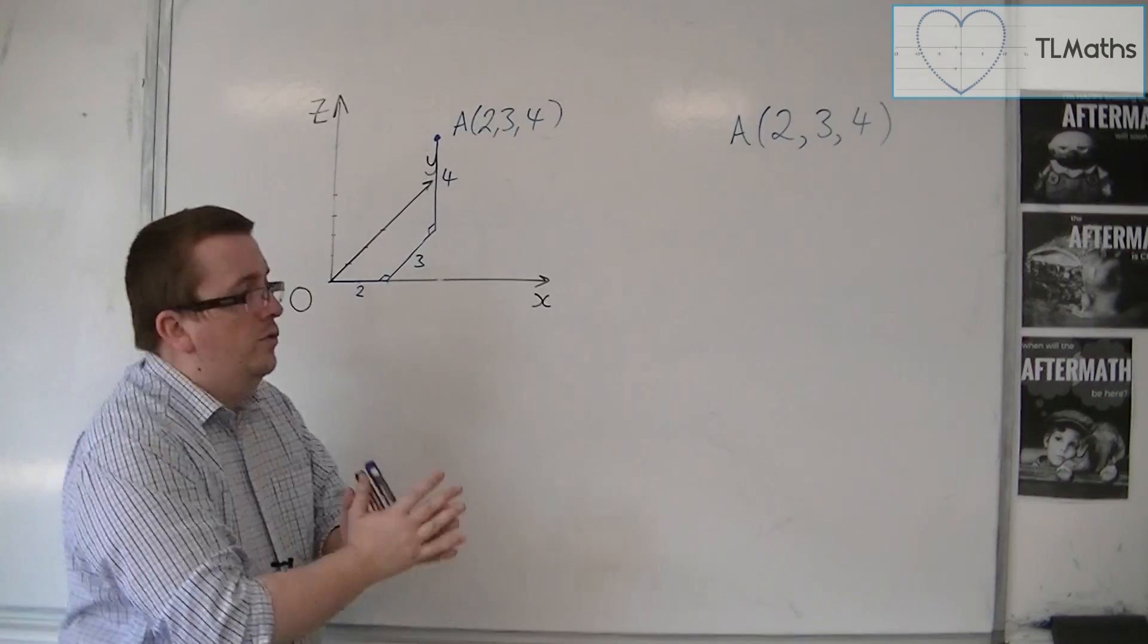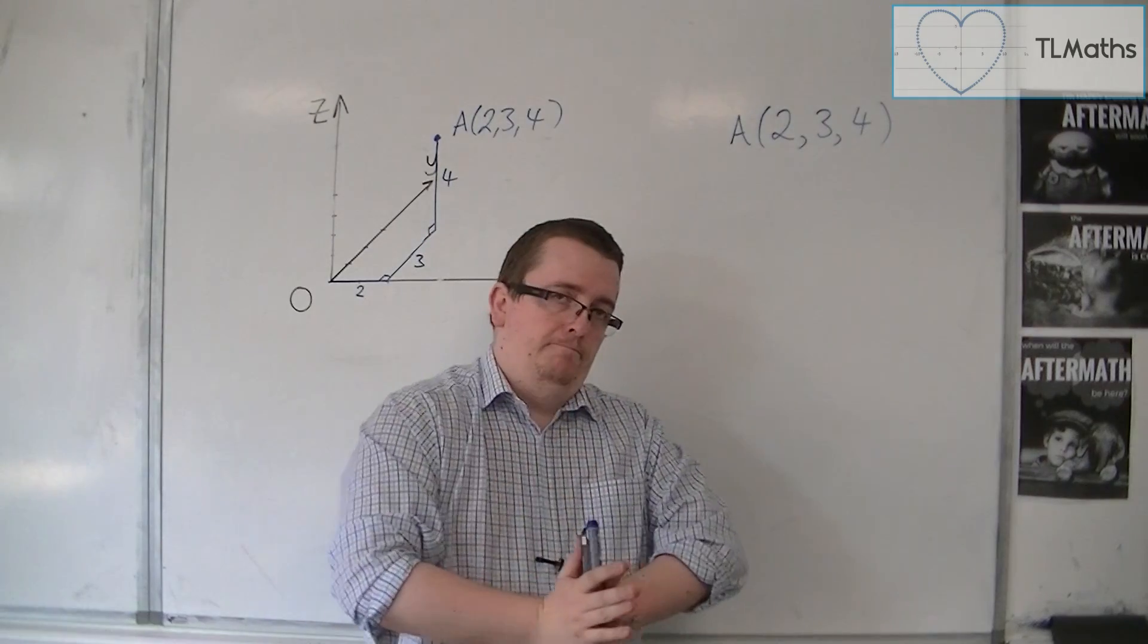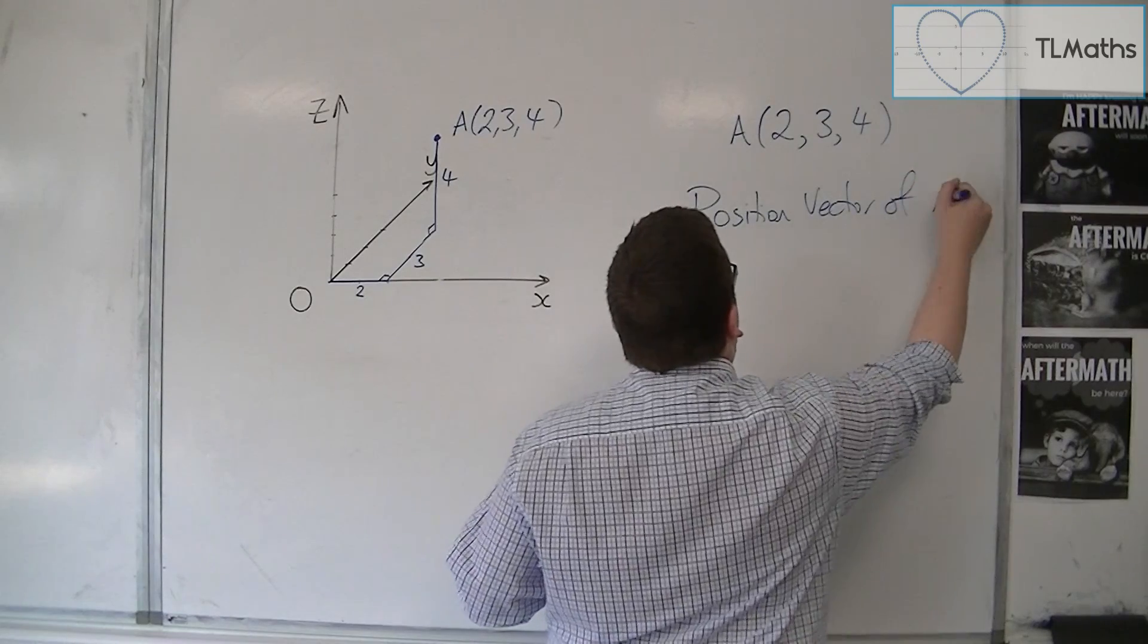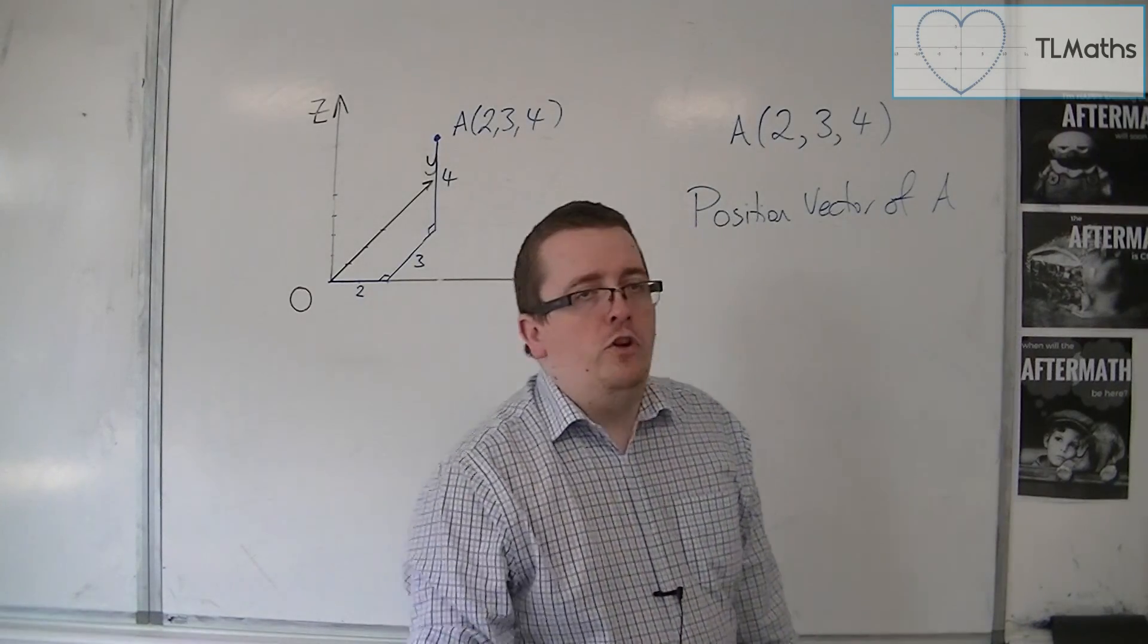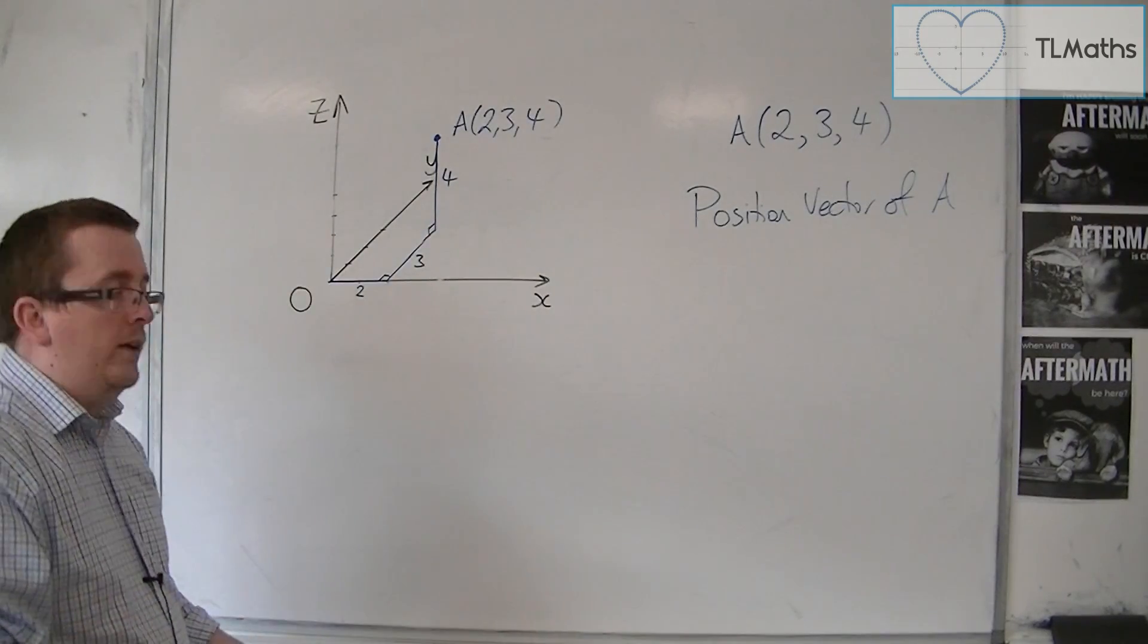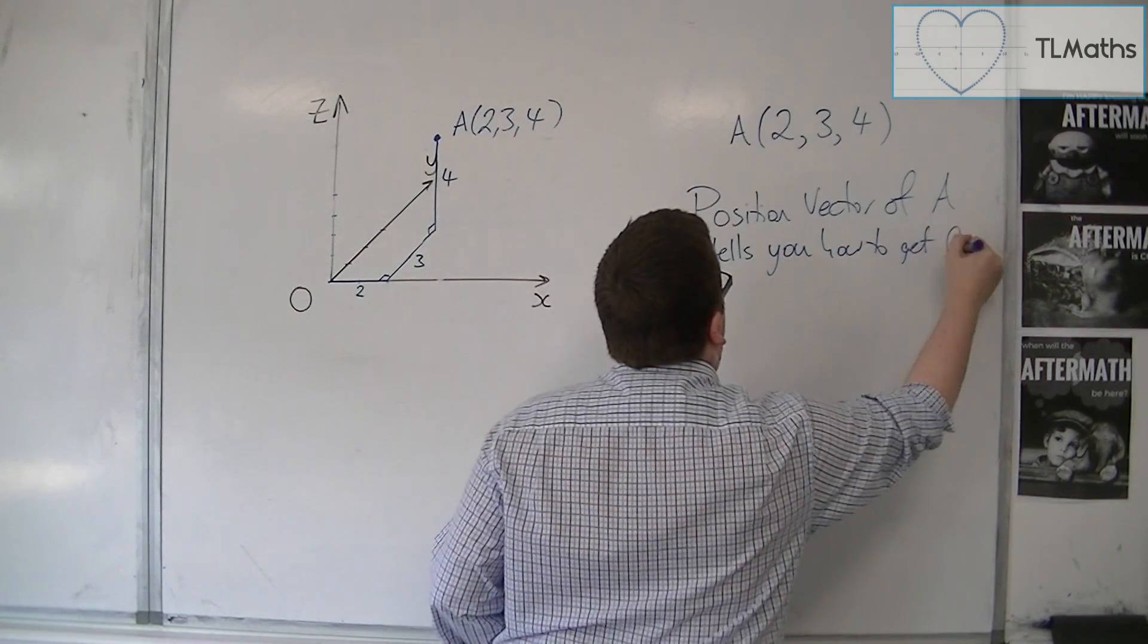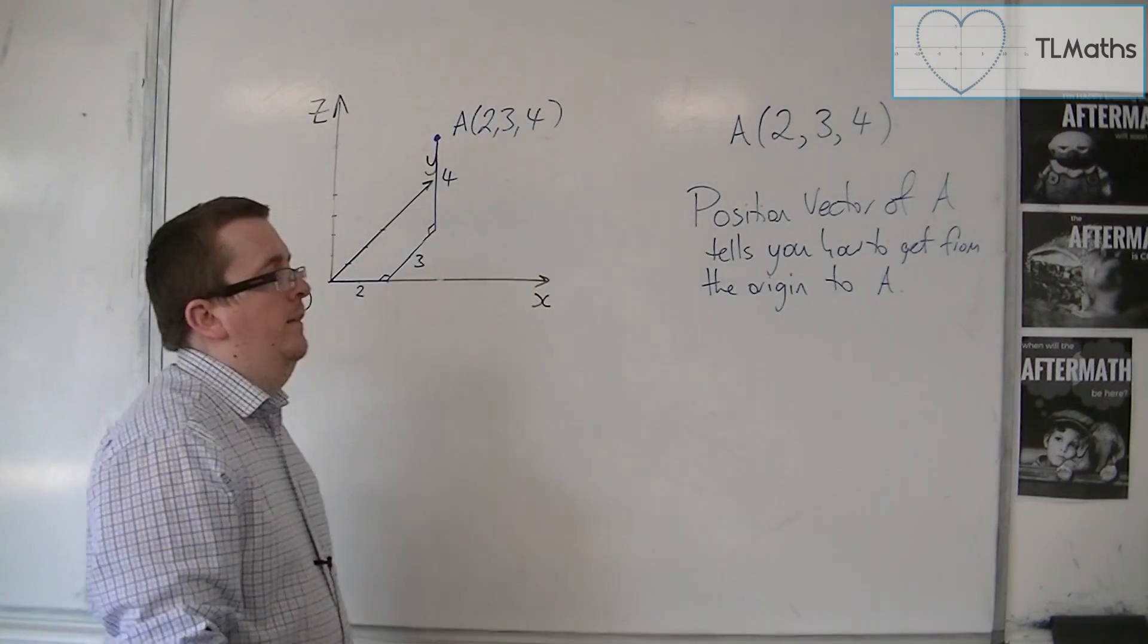Now, all coordinates have a respective position vector. So a position vector of A. So the position vector of A is an instruction. Effectively, all vectors are instructions, and I like to think of them as such. It instructs you how to get from one point to another. So the position vector tells you how to get from the origin to the coordinates of A.